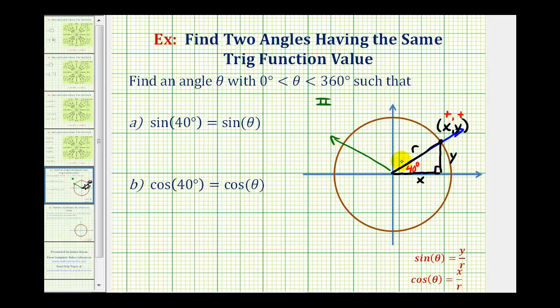So for example, this is the terminal side of our angle that has a reference angle of 40 degrees. And this point here, while it would have a negative x-coordinate, it would have the same y-coordinate as this angle here in the first quadrant.